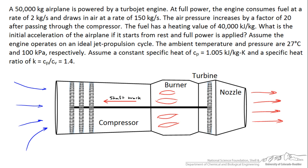In this problem we've got a 50,000 kg airplane powered by a turbojet engine. The engine draws in fuel at 2 kg per second and air at 150 kg per second. As the air passes through the compressor the pressure is increased by a factor of 20. The fuel has a heating value of 40,000 kJ per kg, and the question asks what is the initial acceleration of the airplane if it starts from rest and full power is immediately applied to the engine.